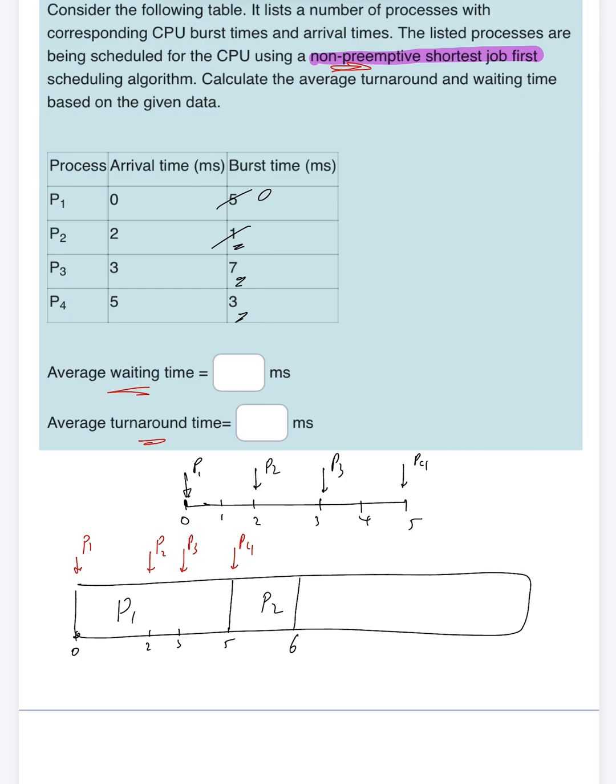Now we need to choose the shortest one between P3 and P4. Definitely P4 is the shortest. It needs three milliseconds, so it leaves at second nine. And the last one is P3, which needs seven milliseconds. Nine plus seven is 16, so P3 leaves at millisecond 16.